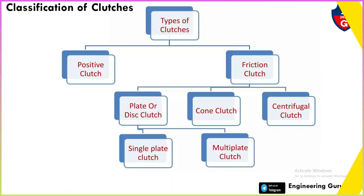This is the classification of clutches. Clutches are divided into four types: mechanical, pneumatic, hydraulic, and electromagnetic. Mechanical clutches are divided into two types: positive clutch and friction clutch. Friction clutch is divided into three types: plate or disc clutch, cone clutch, and centrifugal clutch.